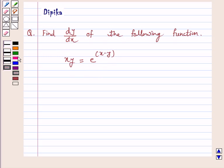So let's start the solution. Our given function is xy equals e raised to power (x minus y). Taking logarithm on both sides,